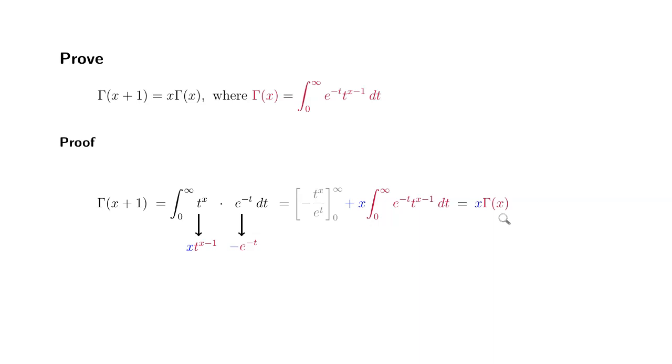So therefore, we have gamma of x plus 1 is equal to x times gamma of x. That's it. I hope that was clear.